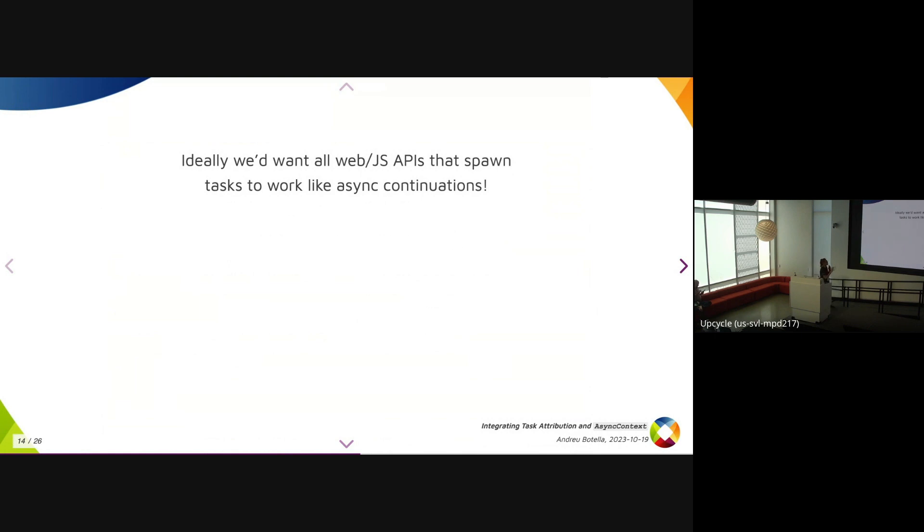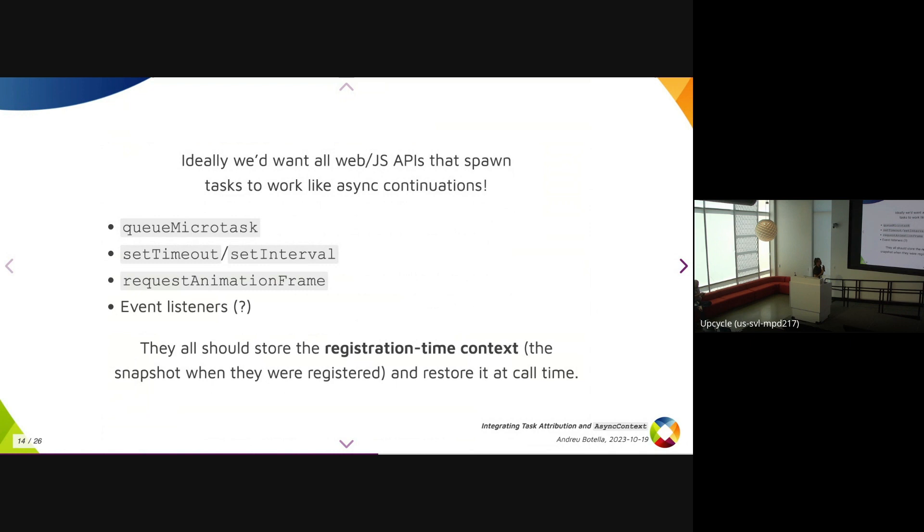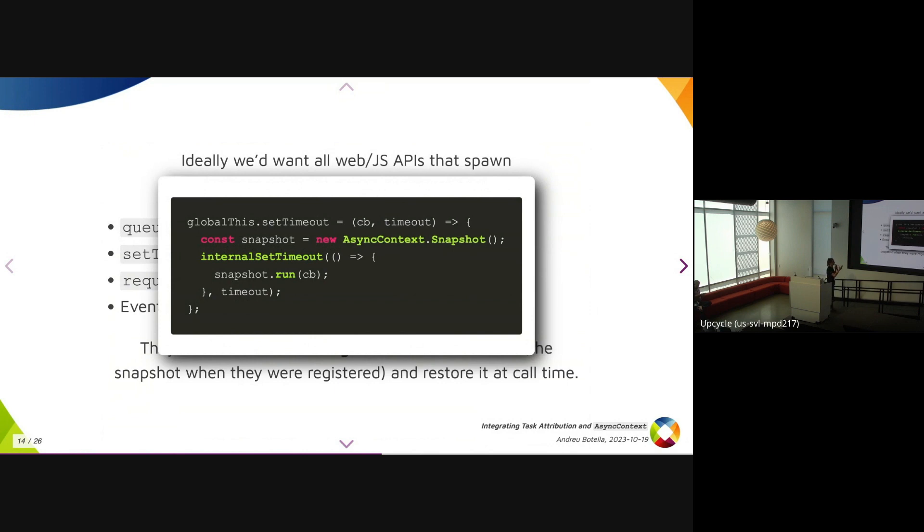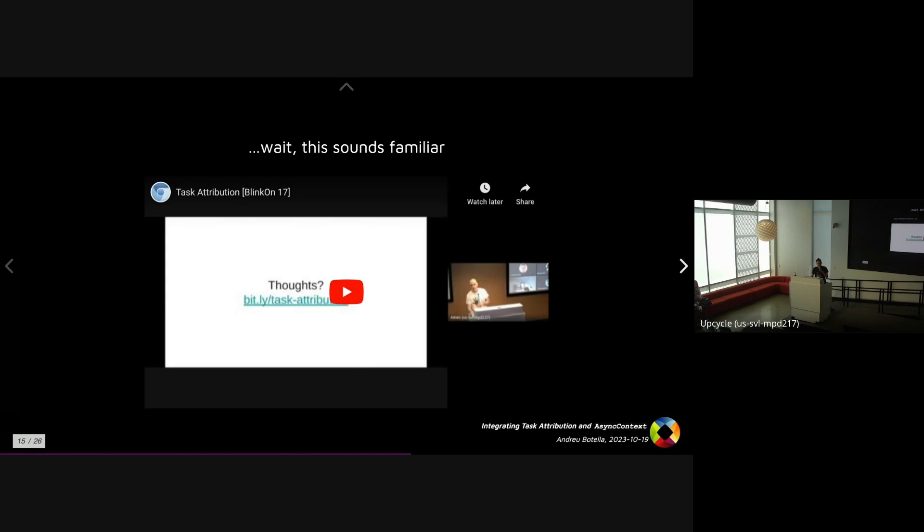And ideally, we would want all web and JavaScript APIs that spawn any tasks to work like that. So something like queueMicrotask, setTimeout, requestAnimationFrame, events - they should store something that we're calling the registration time context, the snapshot at the point where you're calling setTimeout or whichever. And that snapshot would be restored at call time. And here's an implementation of how this would be done in JavaScript. You just implement setTimeout by creating an AsyncContext, and then you have some internal API that does the actual timeout, and inside you run the callback inside the snapshot.